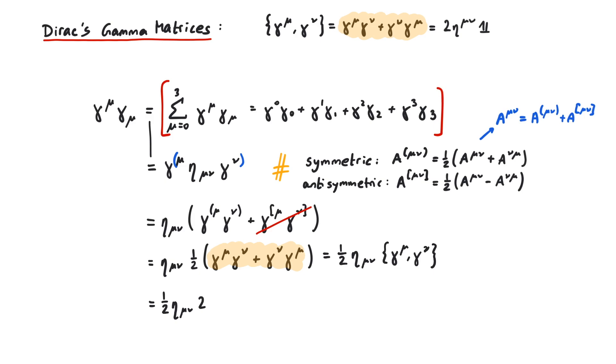And we also know what this is. The one-half cancels the two and we are left with eta mu nu times eta mu nu times the identity matrix.